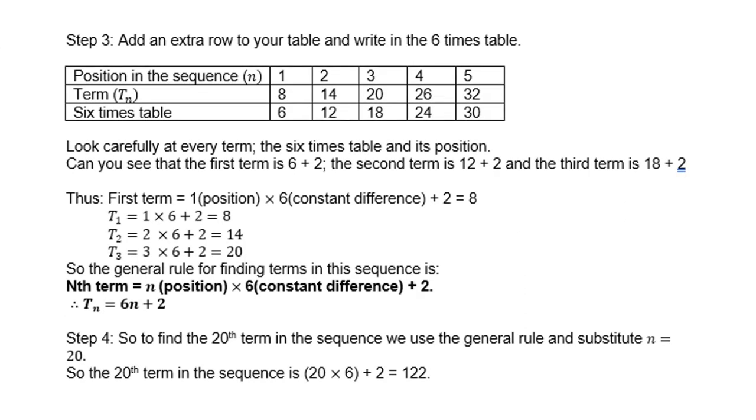Step 3: Add an extra row to your table and write in the 6 times table: 6, 12, 18, 24, 30. Look carefully at every term, the 6 times table and its position. Can you see that the first term is 6 plus 2? The second term is 12 plus 2? And the third term is 18 plus 2?